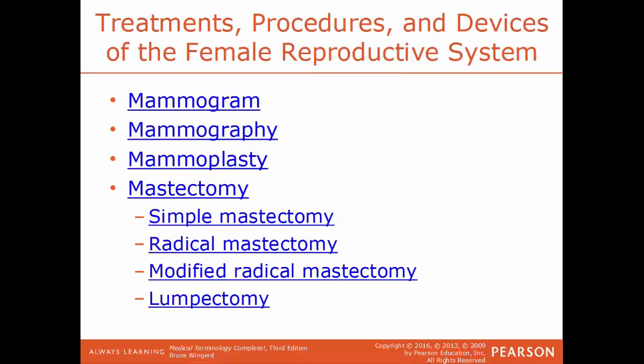A mammogram is the result obtained from a mammography — the actual image of the breast. Mammography is the recording process of the breast. Mammoplasty is the surgical repair of the breast. Mastectomy is the surgical removal of the breast, with different names depending on how much tissue is removed.